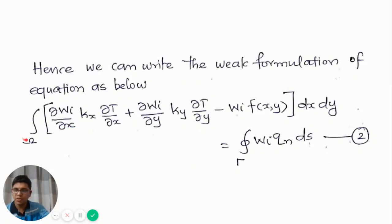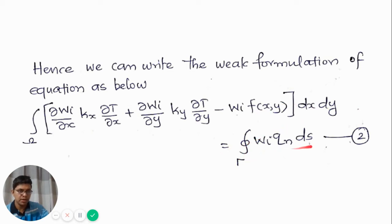Substituting back into the weak form gives: integration over the domain of [dw/dx * kx * dT/dx plus dw/dy * ky * dT/dy minus wi * f(x,y)] dx dy equals integration over the boundary of wi * qn * ds. This is the weak form of the equation.